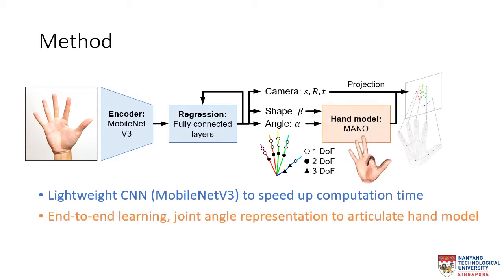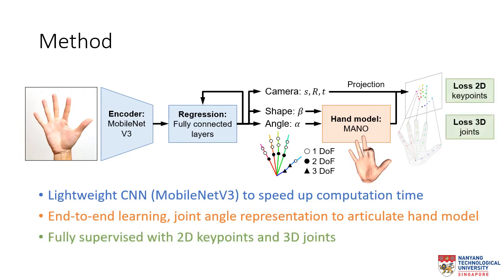To allow end-to-end learning, we incorporate the differentiable manual hand model, and we also propose a simple joint angle representation that is intuitive and allows easy control of the joint, such as the flexion of the index finger. The hand model then uses estimated hand parameters to output 2D keypoints and 3D joints, allowing the training of the network to be fully supervised with 2D and 3D information.